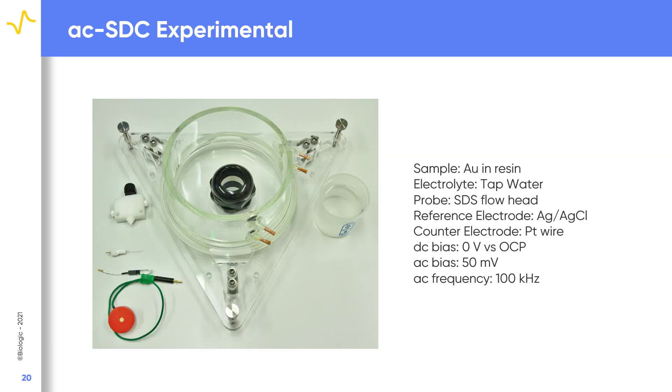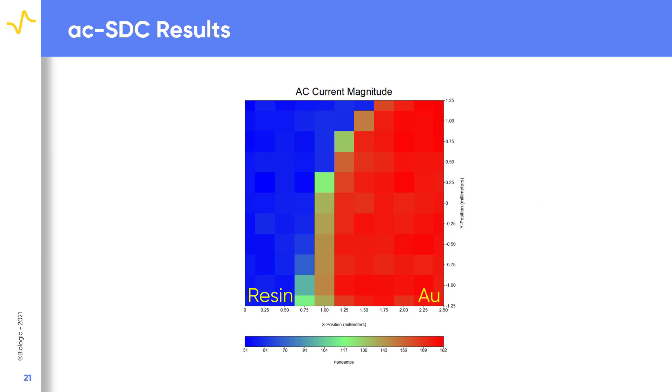The SDS 470 can also be used to perform AC-SDS experiments. Again, the standard gold and resin sample is measured in tap water. The sample is held at OCP with a 50 millivolt AC bias and a 100 kilohertz AC frequency applied. In this case, the AC current magnitude resulting from this measurement is shown, although the impedance data is also collected. As expected, a much larger current is measured over the gold than over the resin.